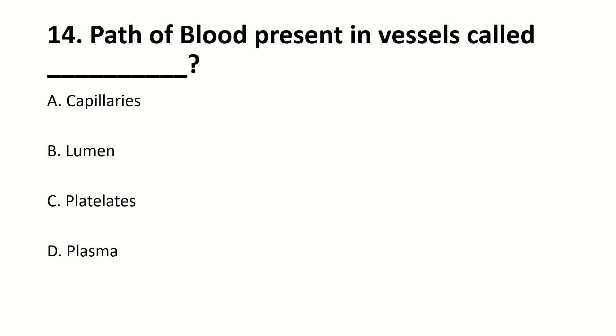The path of blood present in vessels is called ___. The right answer is B: lumen.